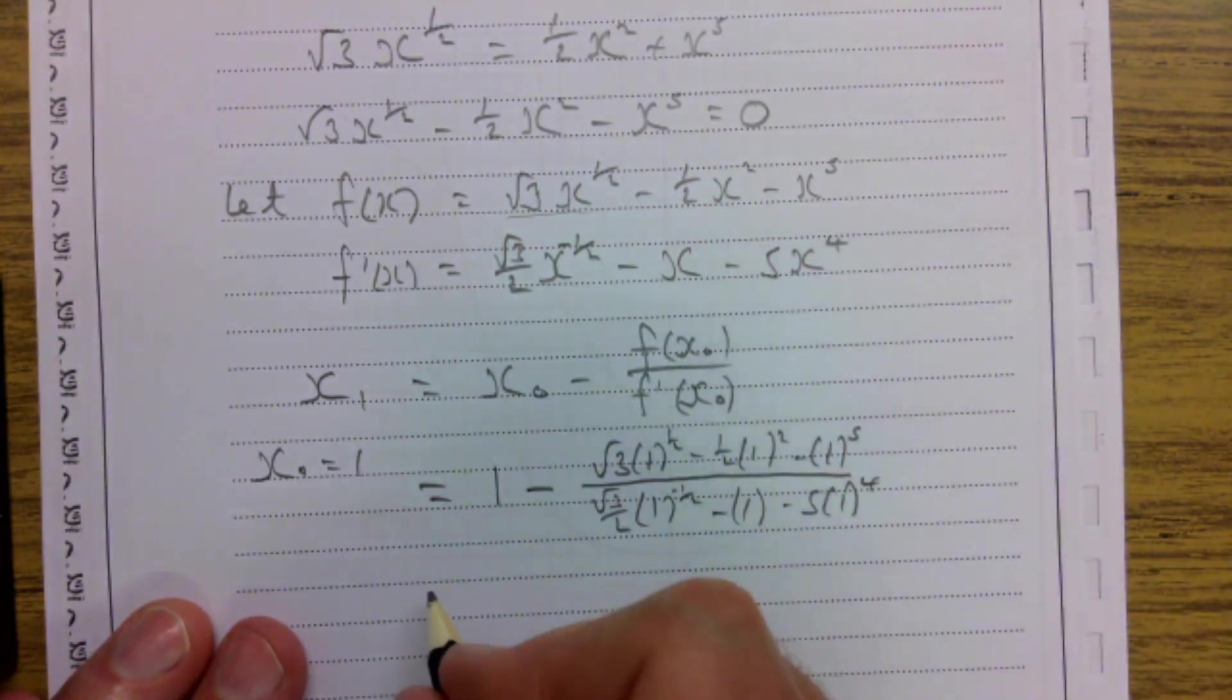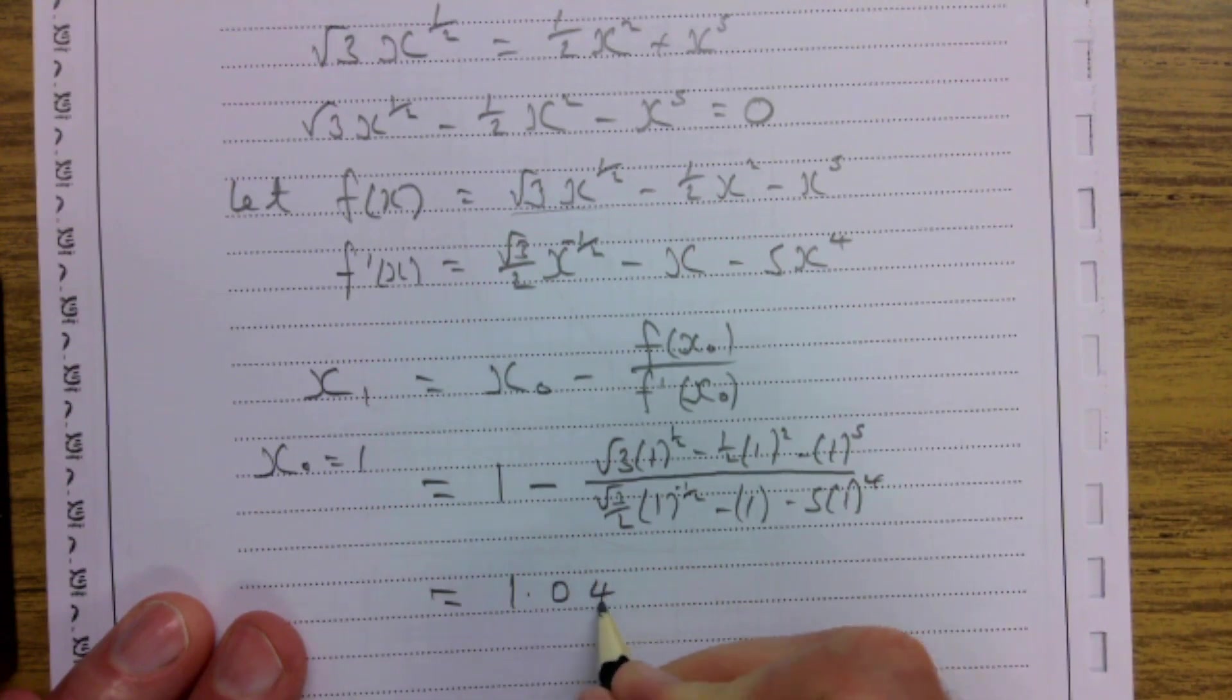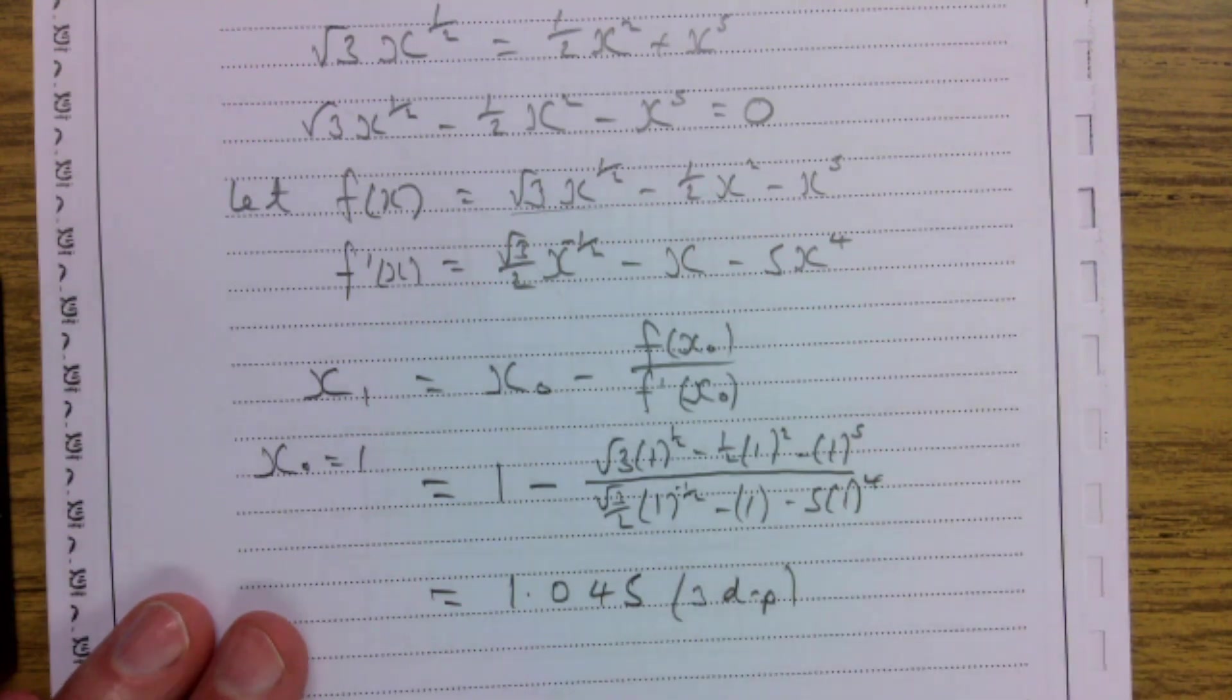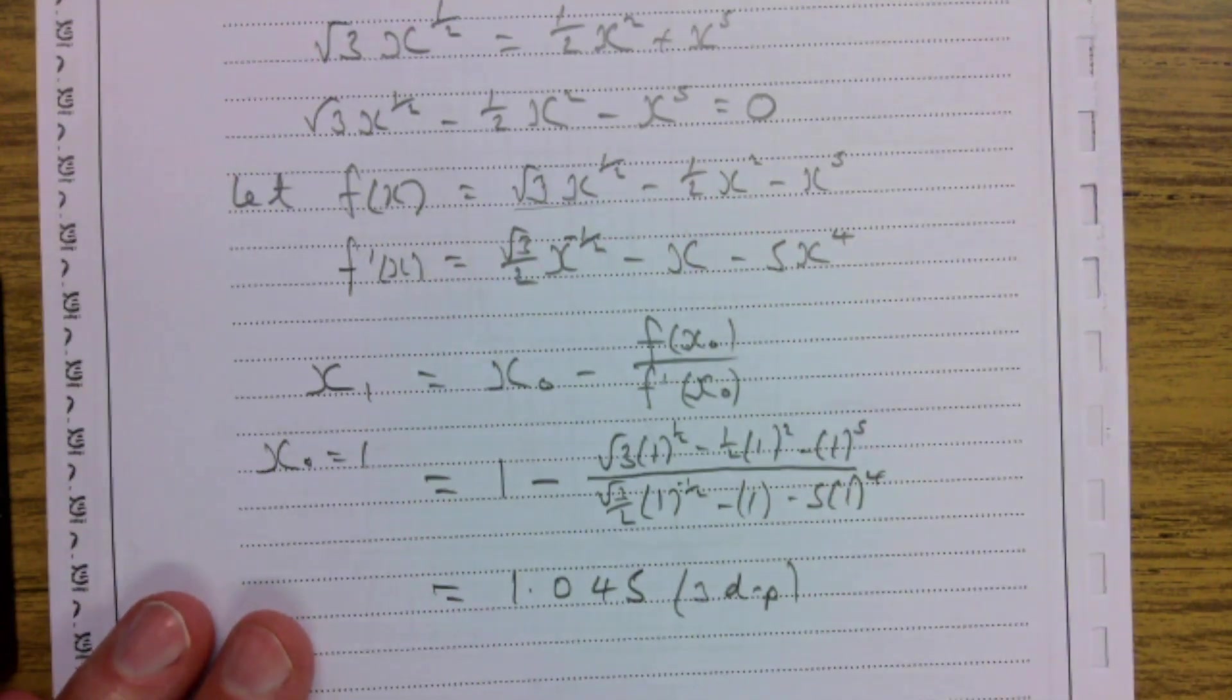Substitute all that into your calculator and you get 1.045. That's an answer then to three decimal places, which is what we're asked for in the question.